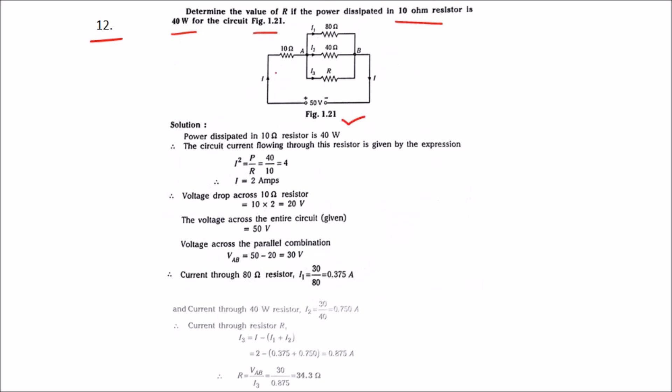They are telling to find the value of R where the power across the 10 ohm resistance is 40 Watt. We know the formula of power P is equal to I square R. Using this we can calculate the value of I as we know R. I square is equal to P by R. They have given power that is 40 and we know R value that is 10. We will get 4. By sending the square that side the I value will become 2 amp. We got the current that is 2 amp.